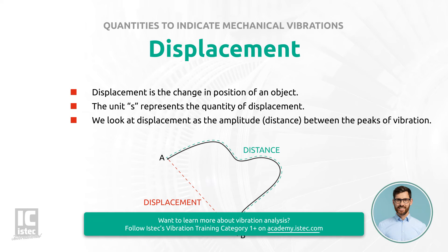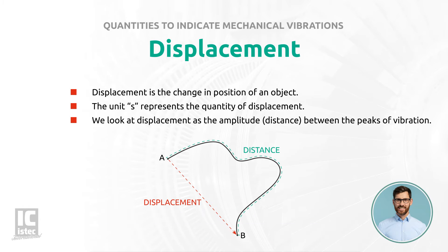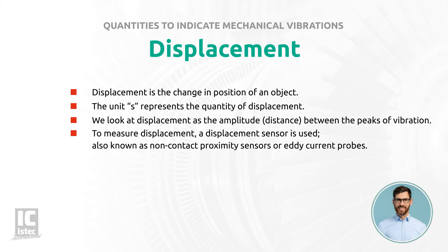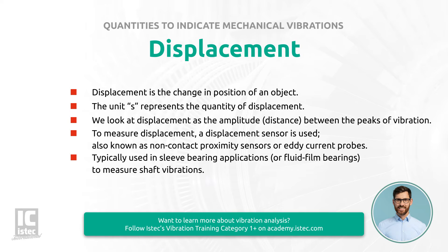We can see that both can be seen as a route from A to B, yet the distance is dependent on the route taken, whereas displacement is not. To measure vibration based on the displacement quantity, a displacement sensor is used. These sensors are also known as non-contact proximity sensors, or eddy current probes, and are typically used in sleeve bearing applications, or fluid film bearings, to measure shaft vibrations.